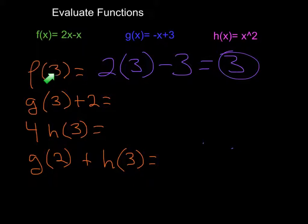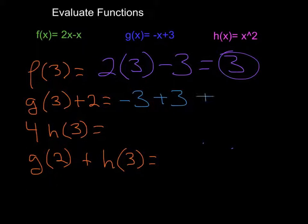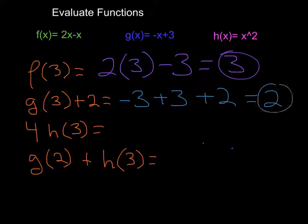So f of 3 equals 3 — or the point where the x value of 3 and the y value of 3 happens to be on that curve. Now let's do g of 3 plus 2. I can take a function and then add something on to the end. Going into the g function, that's negative 3 plus 3, and then I add on the 2 at the end. So negative 3 plus 3 plus 2 simply equals positive 2.